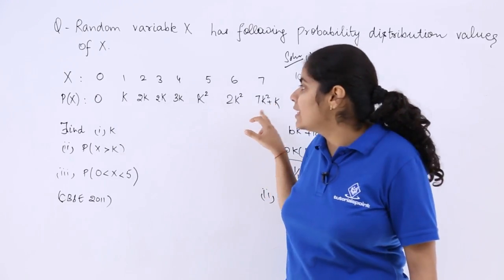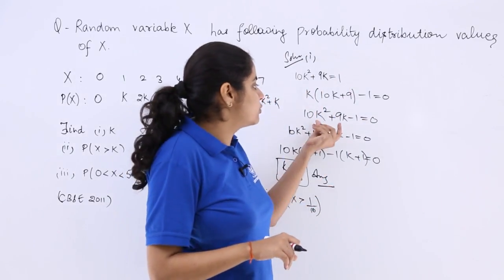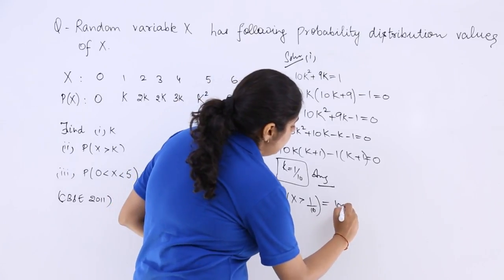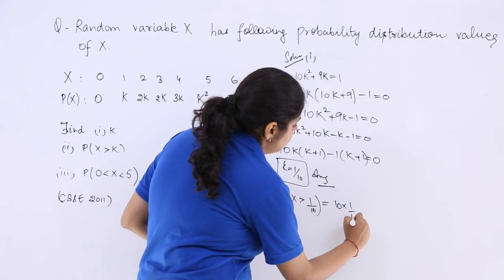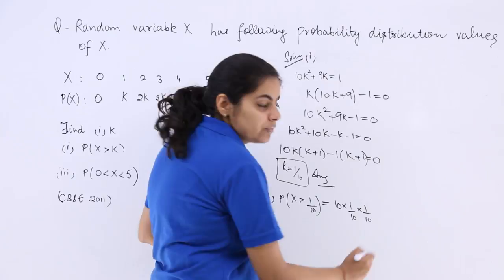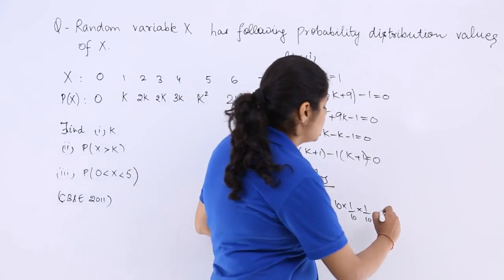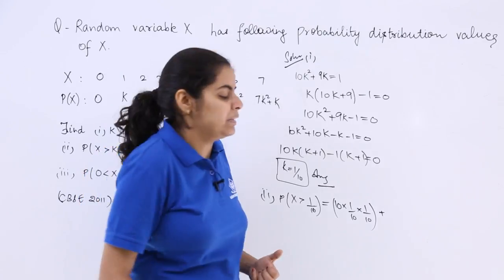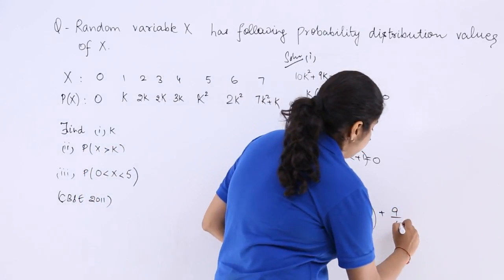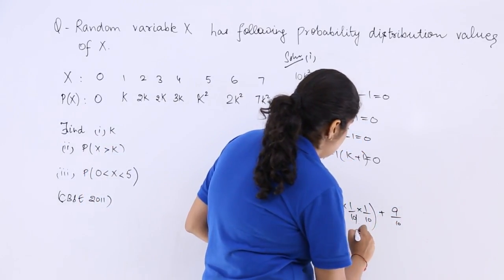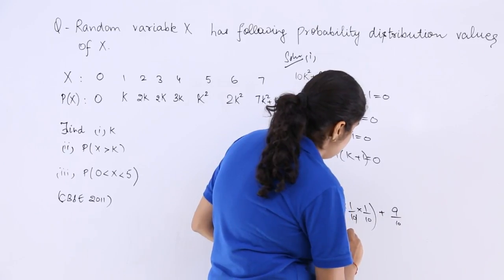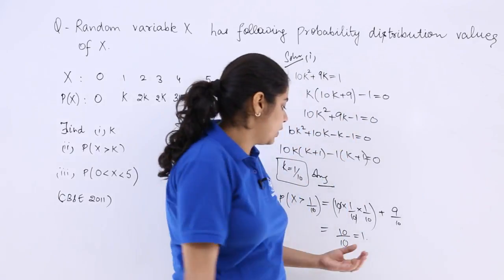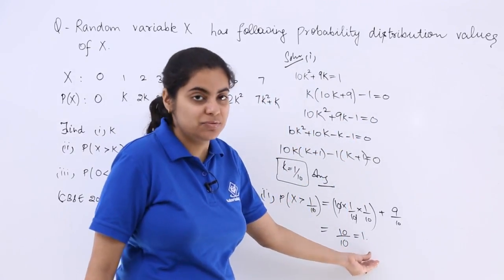So it will be again all these addition which we had already computed, 10k square plus 9k. So this will be 10 into k square which is 1 by 10 whole square. I hope you understand it, plus 9k because we have already done in the previous part. Why calculate again and again? So this is 9k. So this is 1 by 10 plus 9 by 10 which is 10 by 10 which is equal to 1 because all these are included in this fact.